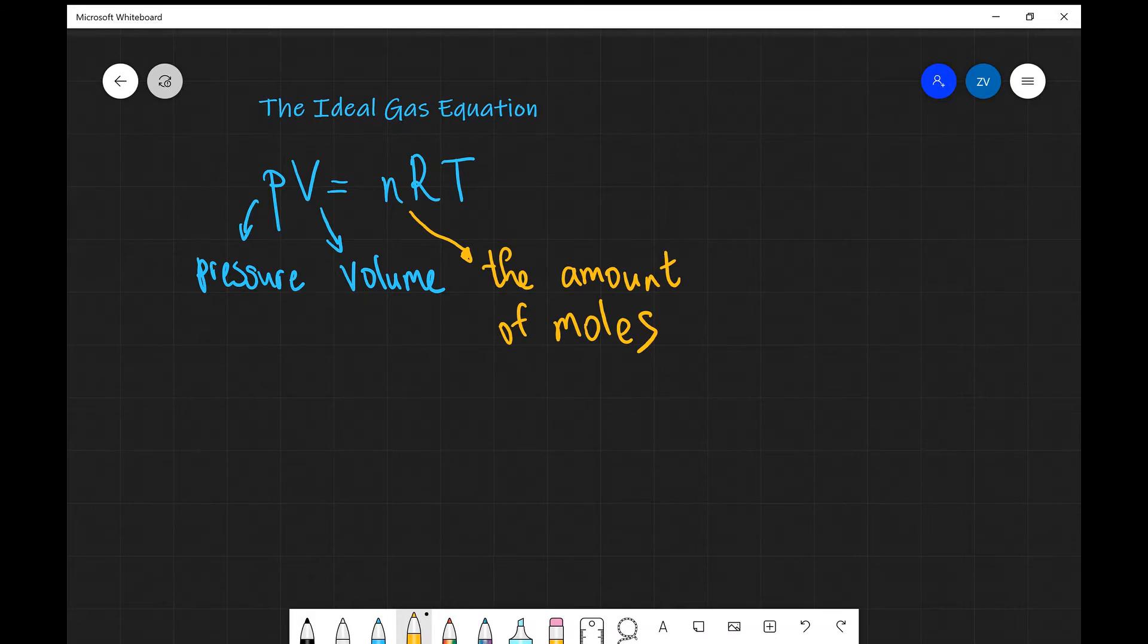Now R in this case is just a constant. In fact, it's the universal molar gas constant which is about 8.31, with units of joules per mole per Kelvin.